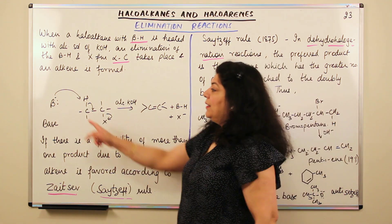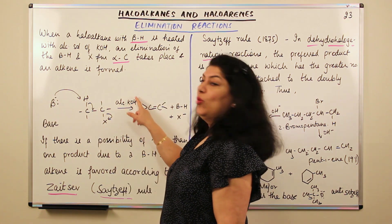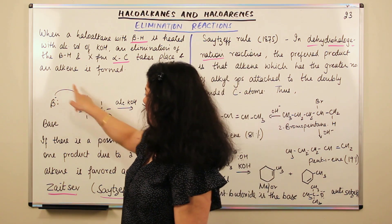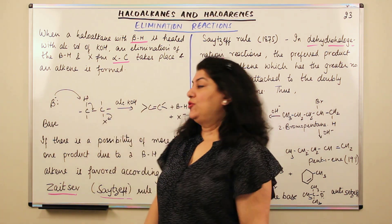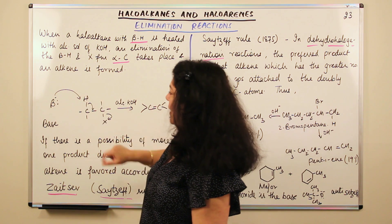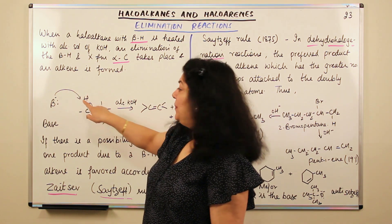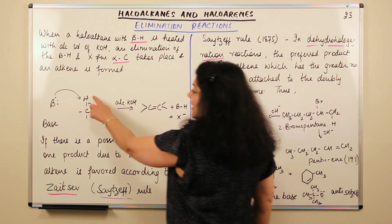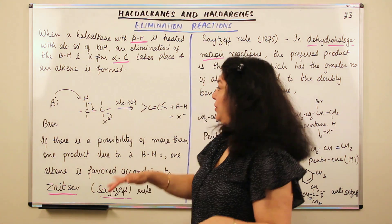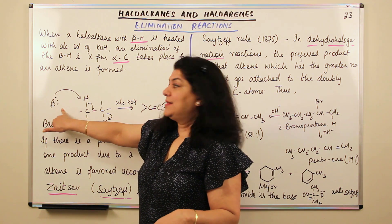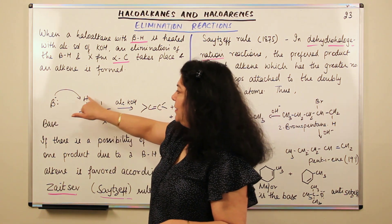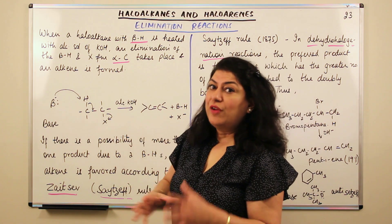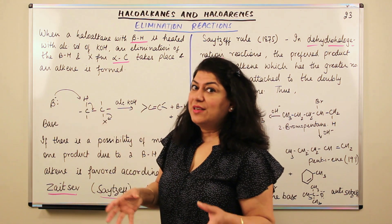Now look at the mechanism. The base is KOH, so OH⁻ is the basic part. The OH⁻ attacks the beta hydrogen. When it attacks the beta hydrogen, it combines with the hydrogen. Hydrogen leaves as H⁺ — it loses its electron and moves to combine with the base. OH⁻ and H⁺ result in the formation of water. So whatever the base is, it combines with the hydrogen to form BH.